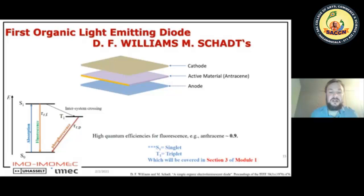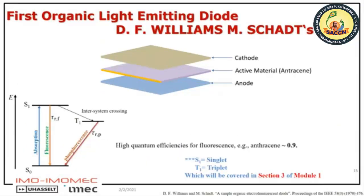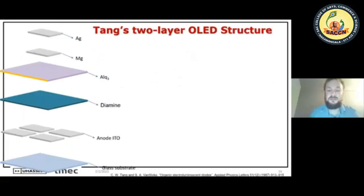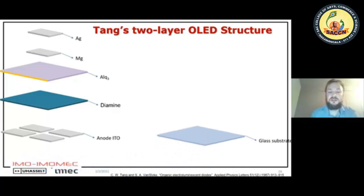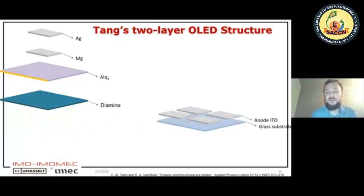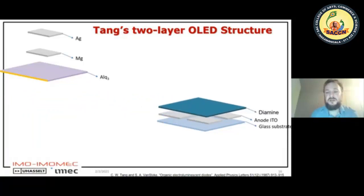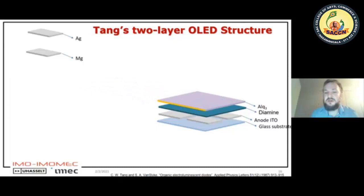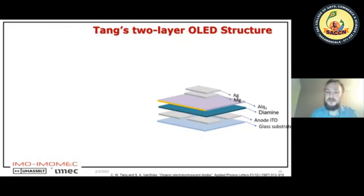The efficiencies were not very high, but by looking into new materials and new layer stacks, this improved. The next step in 1987 was the two-layer organic light emitting device from Tang. You have a glass substrate, then an anode of indium tin oxide (a transparent conductive material), then diamine as a hole transport layer to help holes travel from the anode toward the active material, then ALQ3 as the active material where photon generation happens, then an electron blocking layer, and finally the cathode where you apply the negative potential.